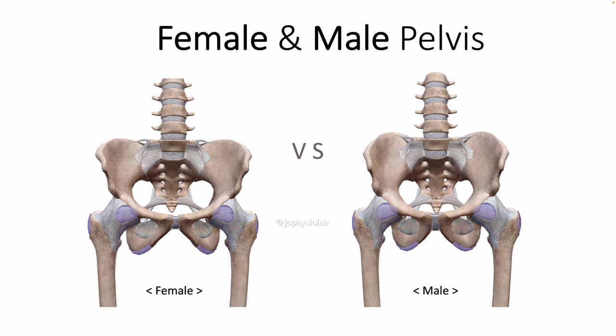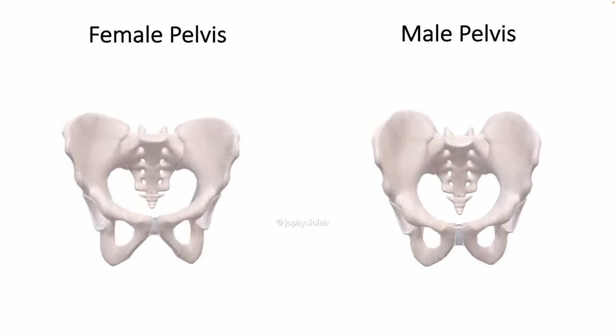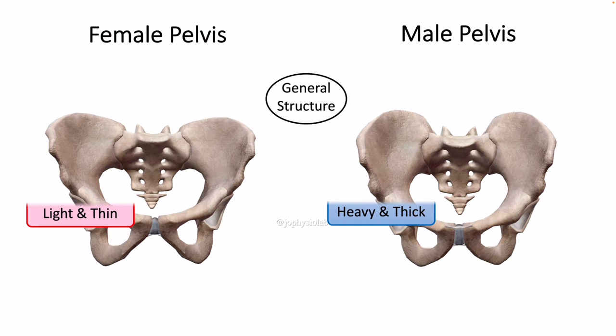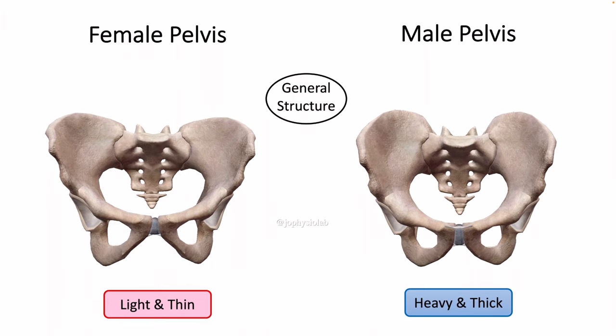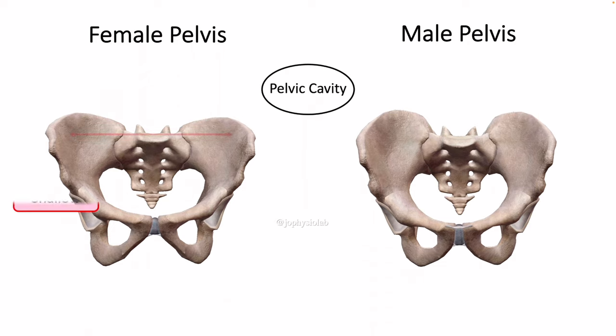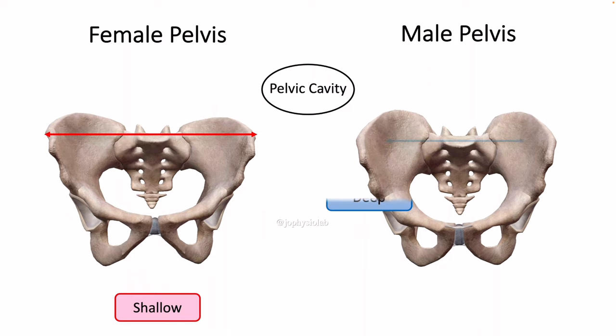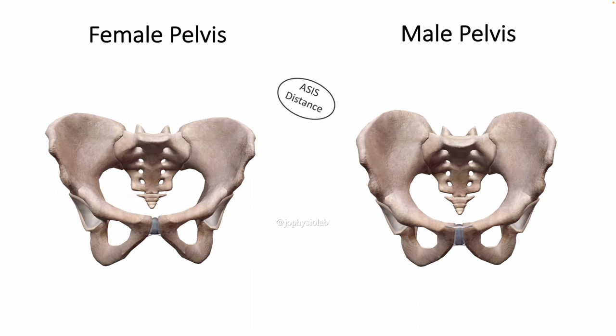Although the female pelvis is wider than the typical male pelvis, these bones are thinner and lighter than the denser, rougher bones of the male pelvis. The female pelvis is wider and more shallow, whereas the male pelvis is deeper and narrower.